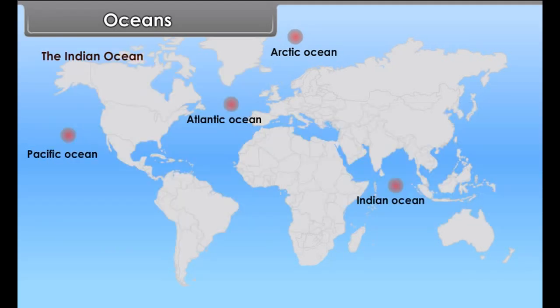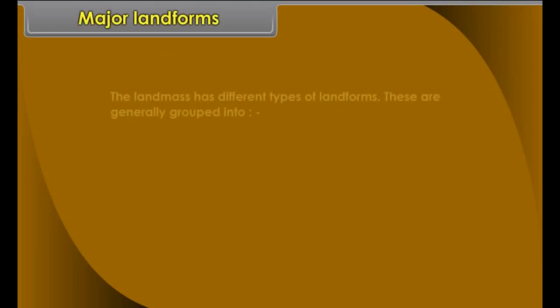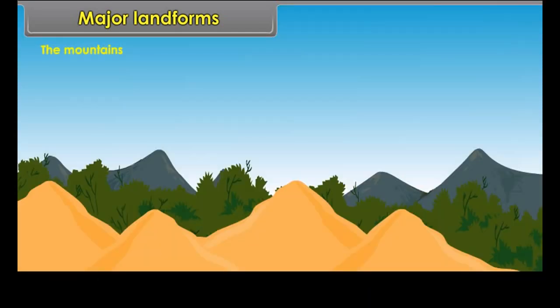The Indian Ocean. The Indian Ocean is named after our country India, indicating its locational importance at the head of the ocean. The northern part of the Indian Ocean is surrounded by Africa to the west, Asia to the north, and Australia to the east. The Arctic Ocean in the North Polar region is the smallest ocean. It is almost completely surrounded by land mass, and the water remains frozen almost throughout the year.